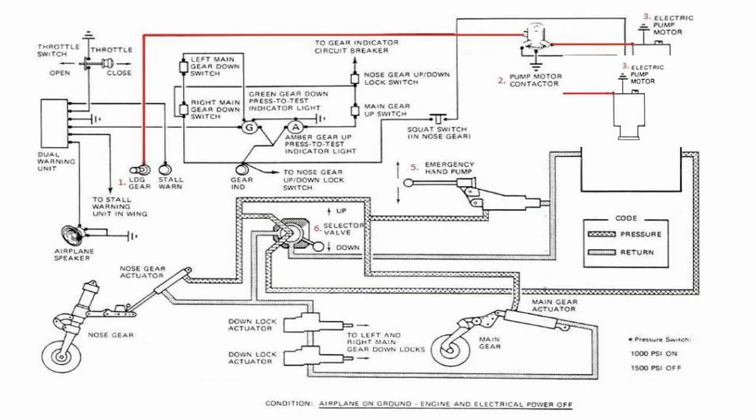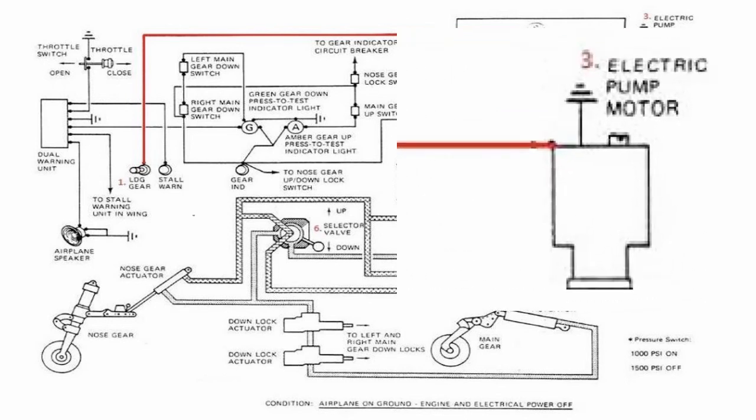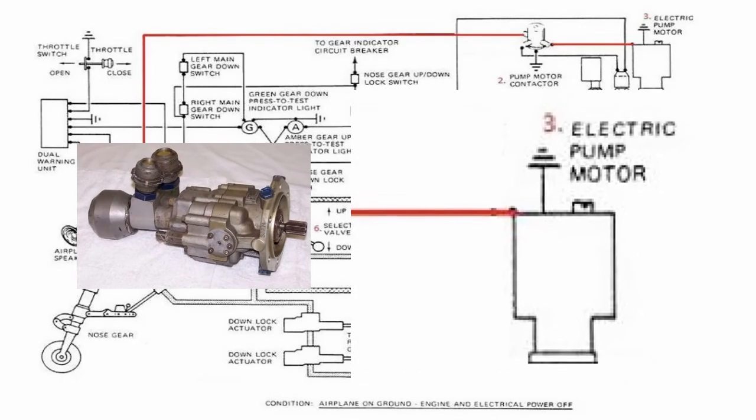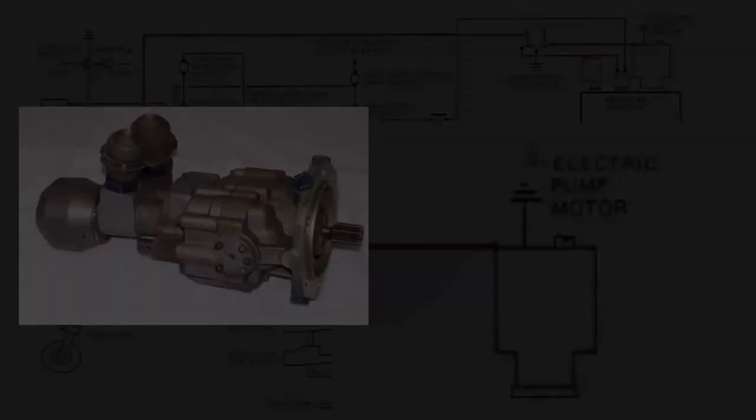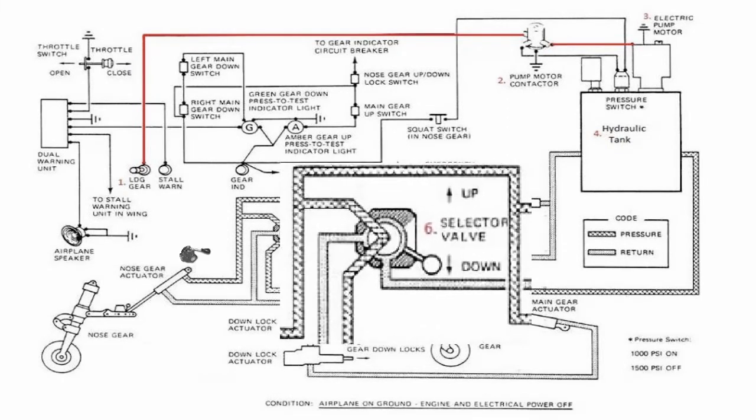The output from the motor contactor is then transferred to the electrical pump motor. The motor is a direct current motor that changes electrical power provided by the motor contactor to mechanical energy that pumps hydraulic fluid in the system. The hydraulic pressure from the electric pump motor is then directed to the selector valve.